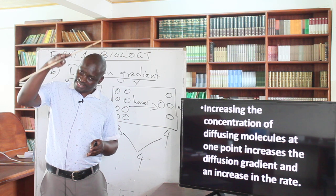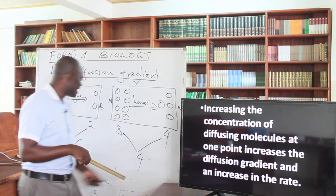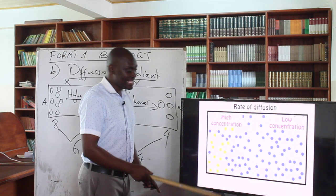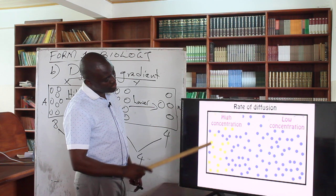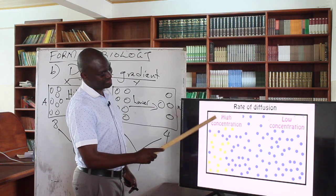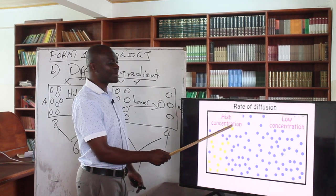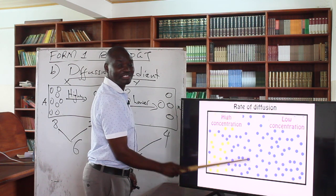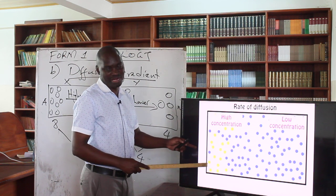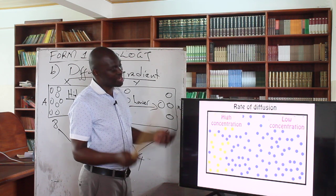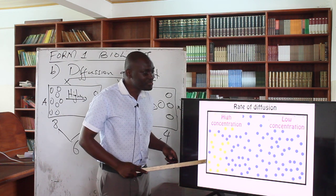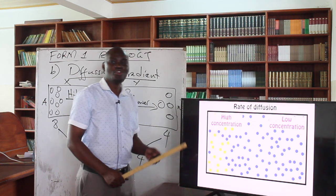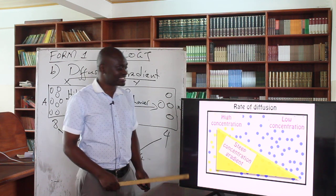If we increase the diffusion gradient, then the rate increases. For example, if we increase the gradient from 4 to 6, the rate of diffusion will also increase. On screen here we have yellow particles — let's say these are perfume molecules — and these are air molecules. On this side we have a higher number of perfume molecules, and on the other side we have no perfume molecules. So these perfume molecules will diffuse towards a region of low concentration.